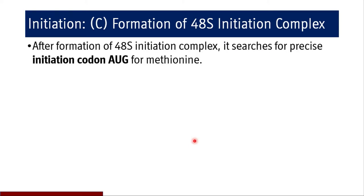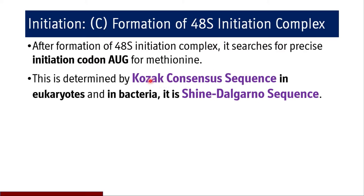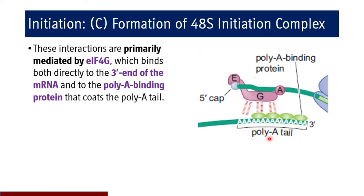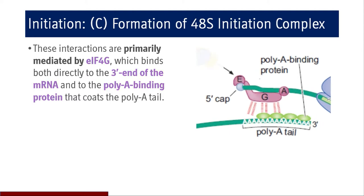After formation of the 48S initiation complex, it searches for the precise initiation codon AUG for methionine. In eukaryotes this is determined by the Kozak consensus sequence, while in bacteria it is the Shine-Dalgarno sequence. These interactions are primarily mediated by EIF4G, which binds both directly to the 3' end of the mRNA and to the poly-A binding protein that coats the poly-A tail. So the 43S pre-initiation complex binds not only to the 5' end cap but also to the poly-A tail through EIF4G.